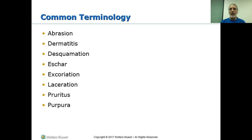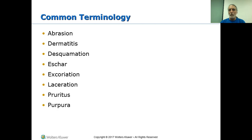Desquamation. Eschar — that would be the black nasty things that you find in wounds. Excoriation — you'll often find this in patients who have a lot of moisture, those that wear briefs. Moisture and acidity can lead to excoriation if you're losing the top layers of the skin. Laceration is generally done by a jagged edge. The difference between an incision and a laceration is generally intent. An incision is done with a smooth, clean edge, and a laceration would be something that comes accidentally. Pruritus and purpura: itching and purplish discoloration.